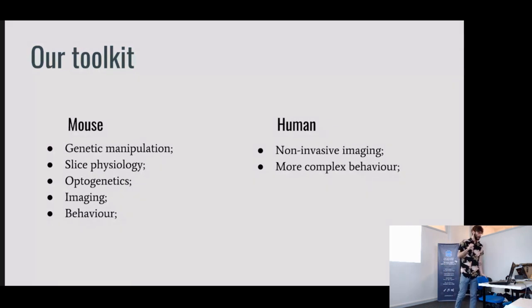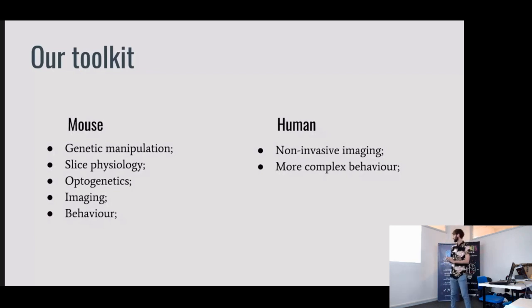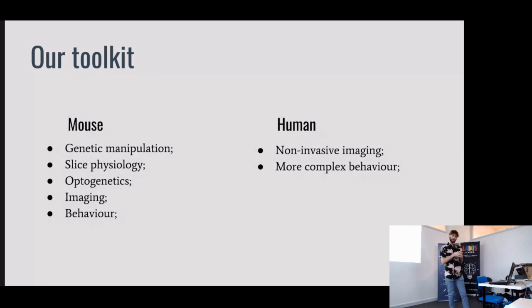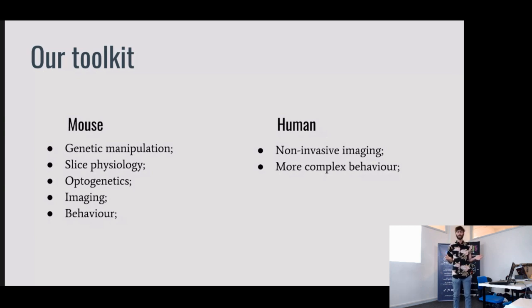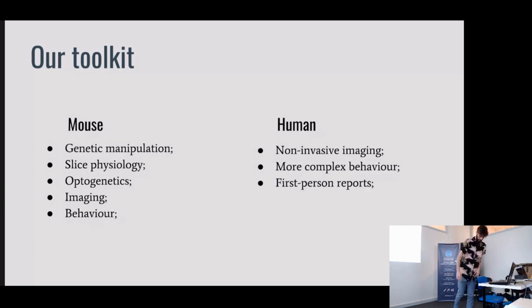In the humans, while in theory we could do all of those, ethically we cannot. But we can do other things: non-invasive imaging — MRI, putting someone in a scanner and asking what they see. We can look at more complex behavior. And there's one other thing that to me is the most interesting and rich — the only thing you can only get from a human and no other species. Does anyone have an intuition? It's their report. We can ask them: what was it like? How did you do it? While there's a lot of progress in the monkey field, it's still not doable there. In humans, you can just ask anyone what they did.